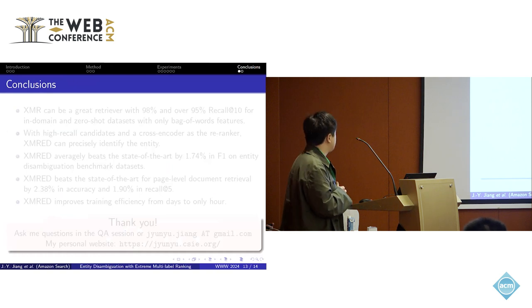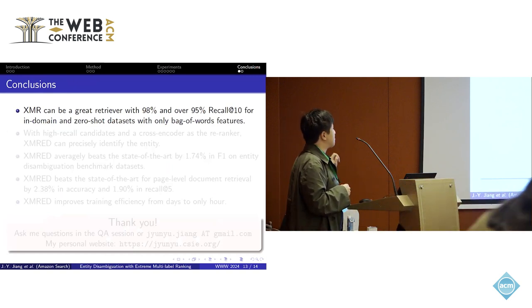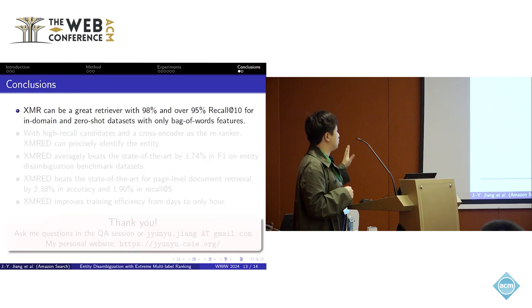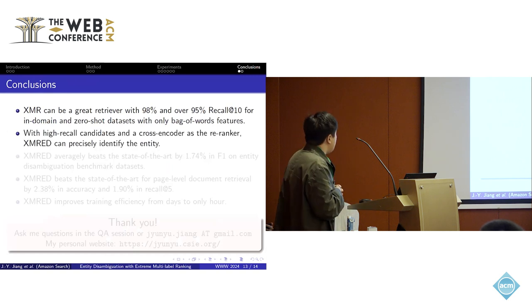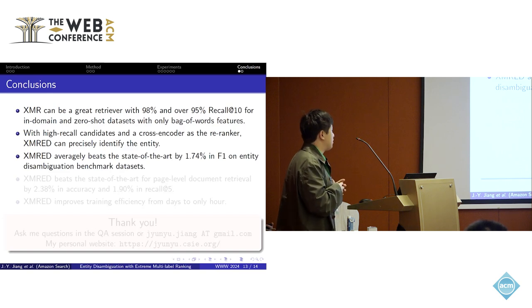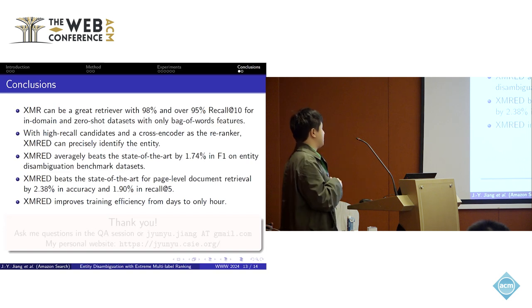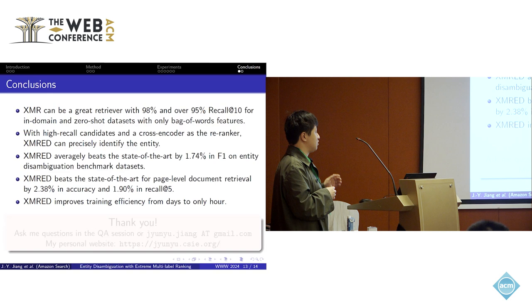Finally, I'll give some conclusions. The extreme multi-label ranking can be a very great retriever with over 95% recall score for in-domain and zero-shot out-of-domain datasets with only bag-of-words features. With the high recall candidates and the cross-encoder as a re-ranker, our method can precisely identify the entity behind the mention. Our method on average beats the state-of-the-art by 1.74% in F1 score on the entity disambiguation benchmark dataset. We also have improvement of 2.78% in accuracy and 1.90% in recall. And finally, compared to the baseline method, we can improve the training efficiency from days to only an hour.